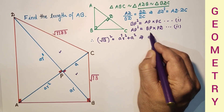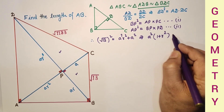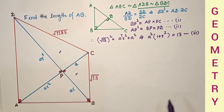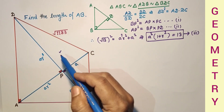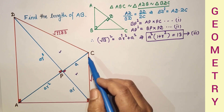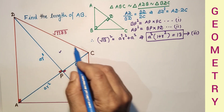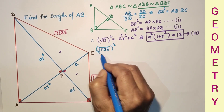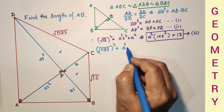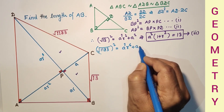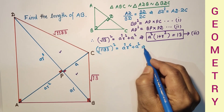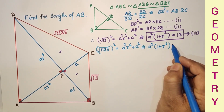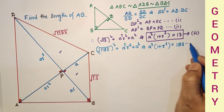Using Pythagoras theorem in the other triangle, DC squared equals the sum of the relevant sides squared. So (√1183)² = a²r⁶ + a². Taking a² common: 1183 = a²(1 + r⁶). That is equation four.